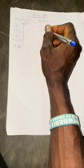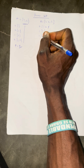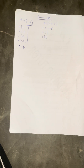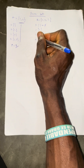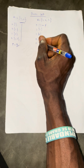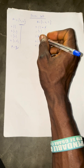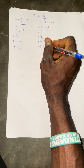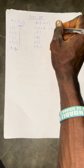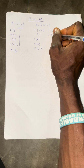Number 2, you have {1}. Number 3, you have {2}. Number 4, you have {3}. Number 5, you have {1, 2}. Number 6, you have {1, 3}. Number 7, you have {2, 3}.